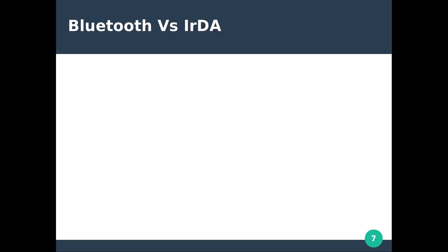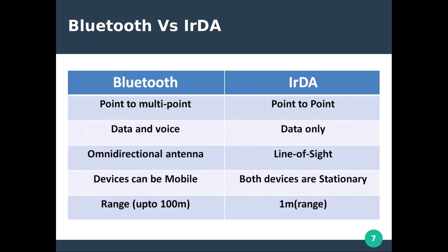Now let's have a quick comparison between Bluetooth and the Infrared Data Association (IrDA), which offers similar functionality. Bluetooth supports point-to-multipoint communication, covering both point-to-point and multipoint, whereas IrDA supports only point-to-point communication. IrDA supports only data, while Bluetooth supports both data and voice.